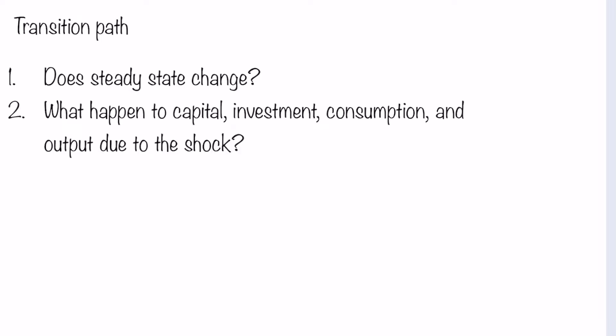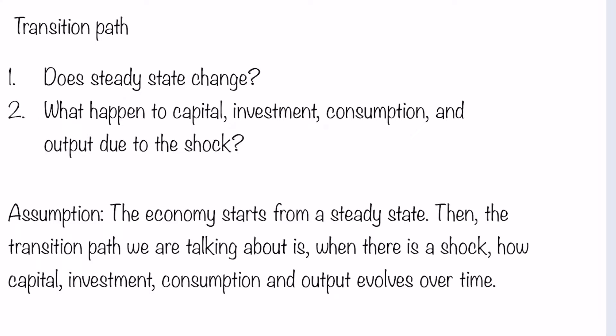The second question we want to ask is what happened to capital, investment, consumption, and output due to the shock — at the time the shock occurs, after the shock occurs, and before the shock occurs. For simplification, we assume that the economy always starts from the steady state and then there is a shock occurring, for example at time t equals 3. So the transition we are talking about is when there is a shock, how does capital, investment, consumption, and output evolve over time.